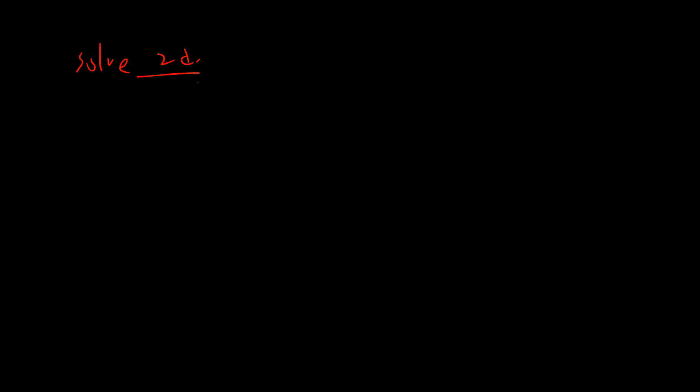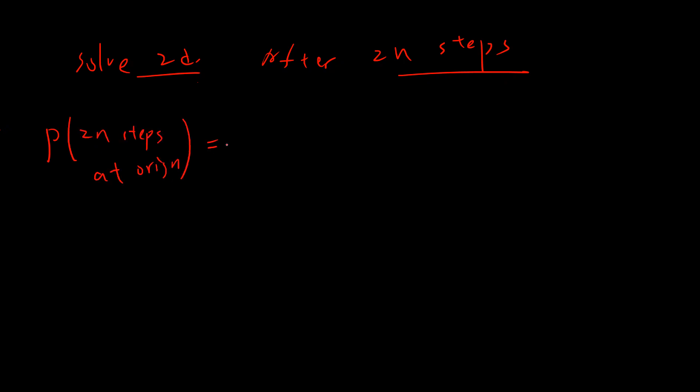Okay so we just solve 2D. After 2n steps — why 2n and not n? Because if you want to go back to the origin, the number of steps must be even, since you need to go right and left, or north and south. So you need at least 2n steps to go back to the origin.